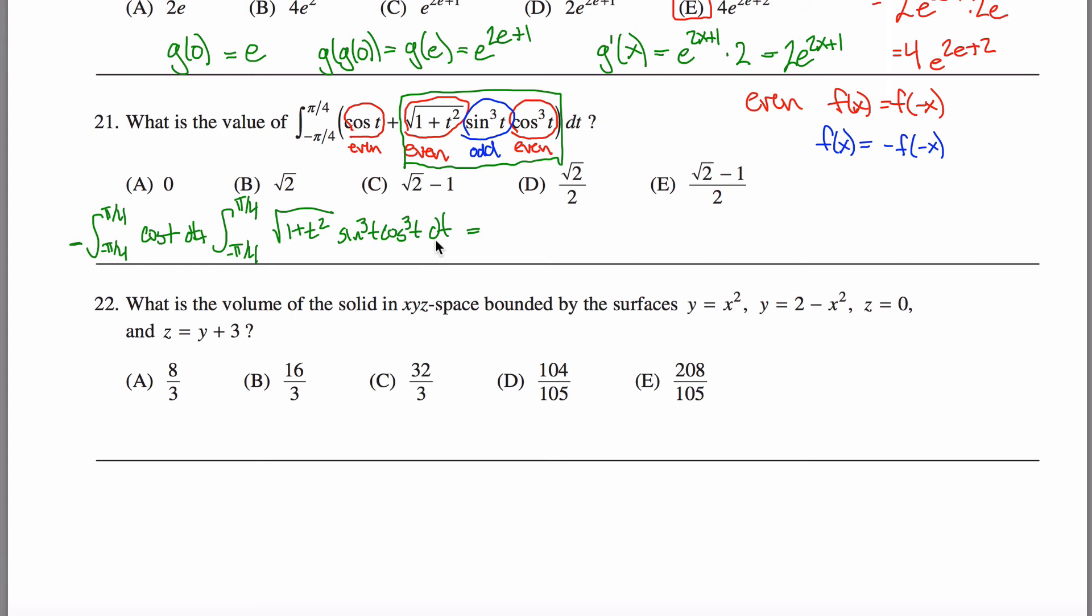But because this right here is an odd function, this integral equals 0. So really, this is just equal to the integral from negative π over 4 to π over 4 of cosine of t dt plus 0 if you feel like it.